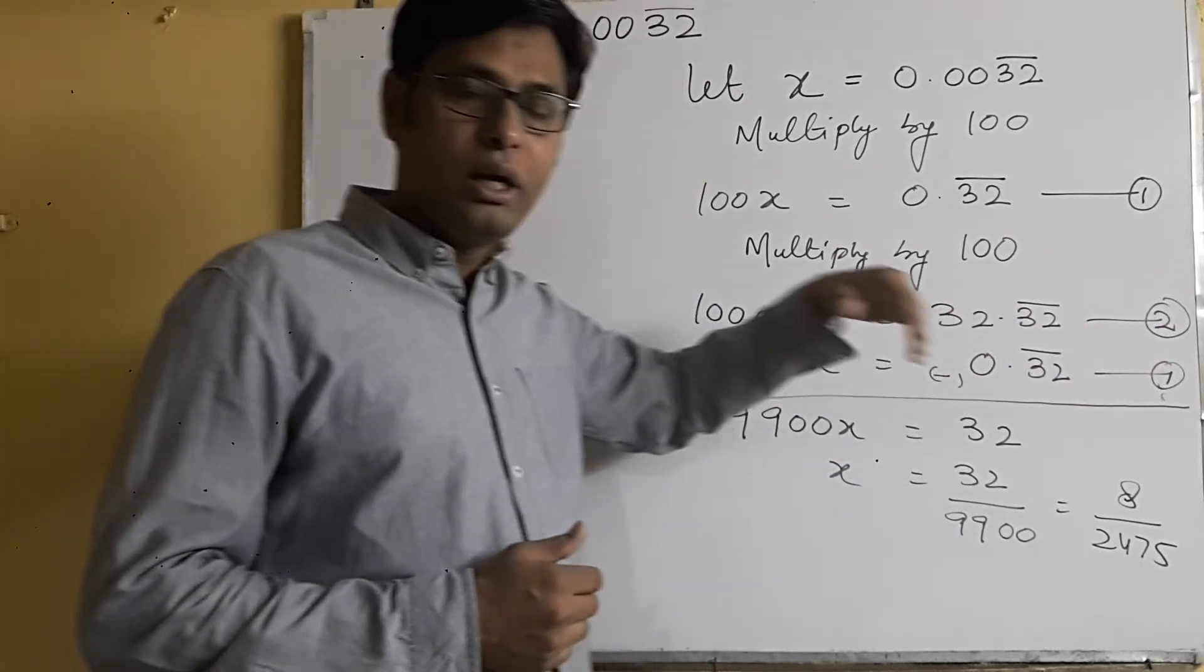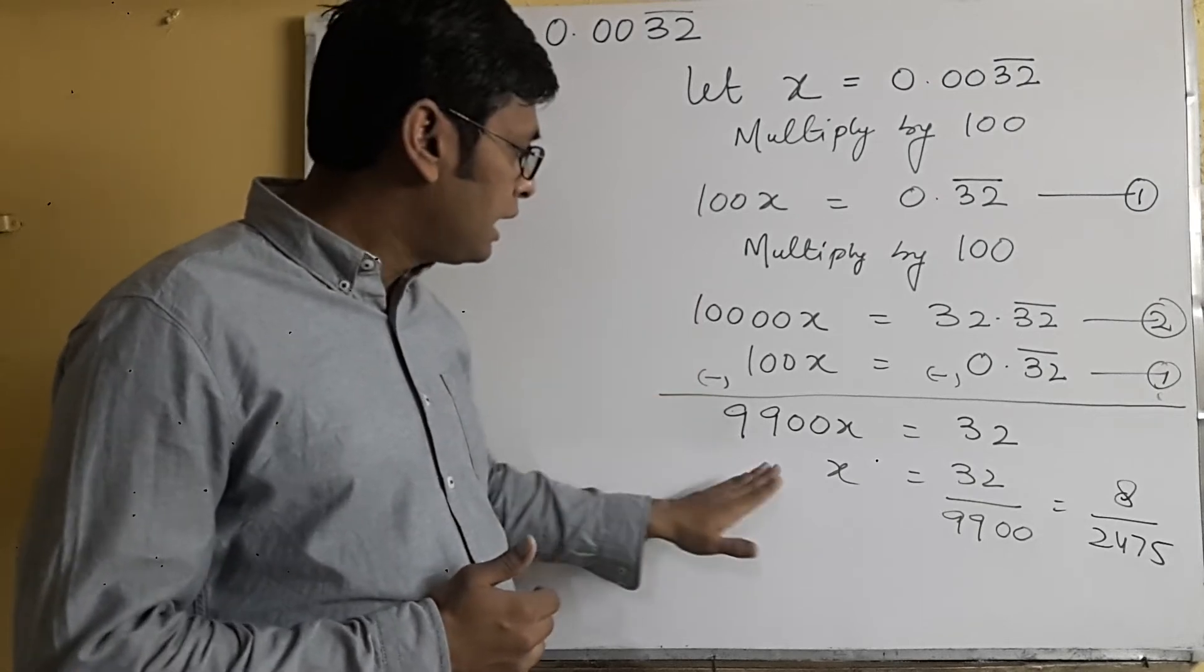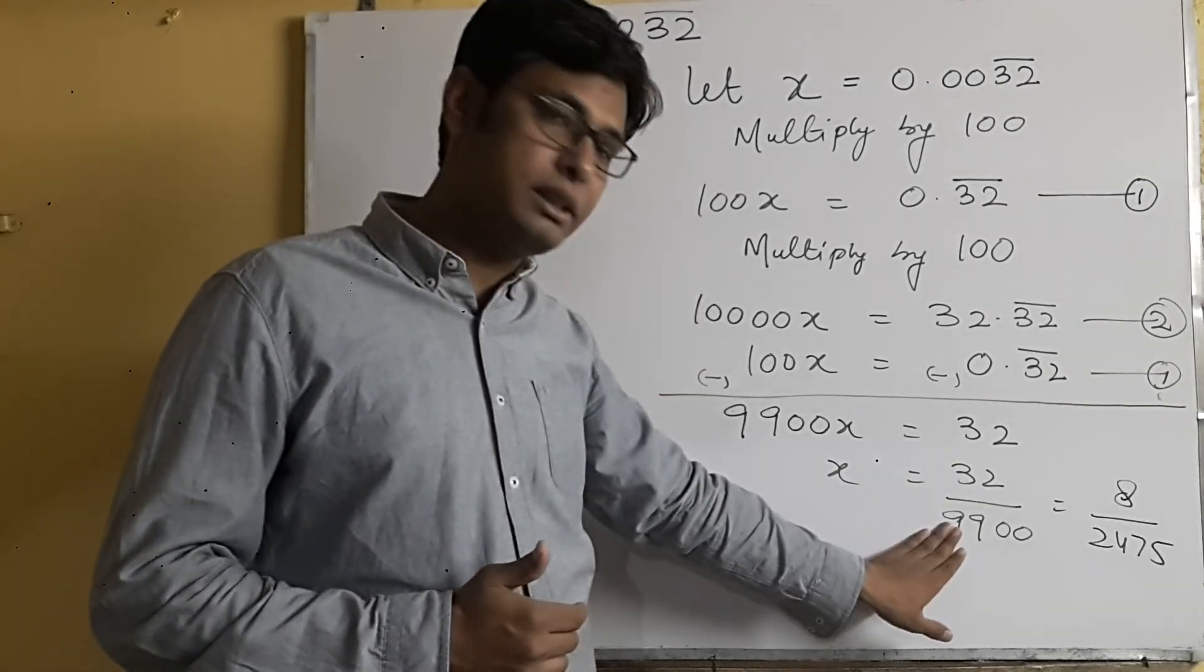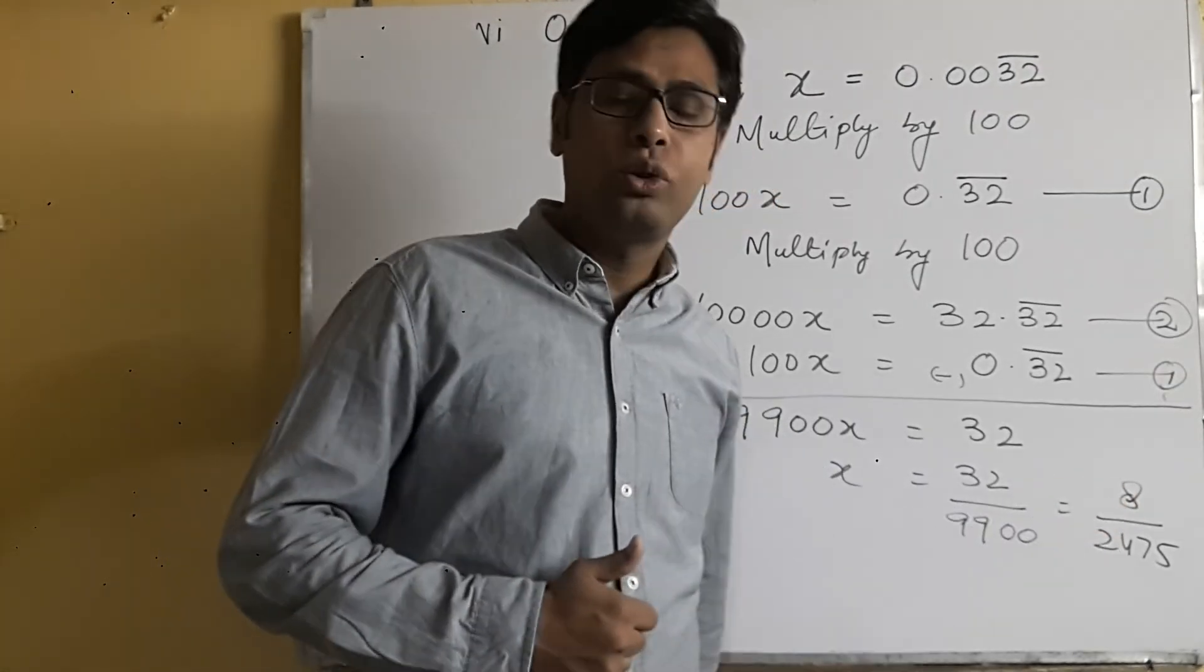Again we'll subtract the first equation from the second equation, and this will be the answer. And when you further solve it, you'll get 8 upon 2475.